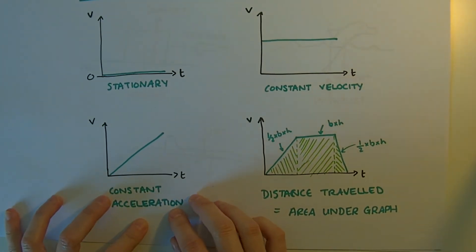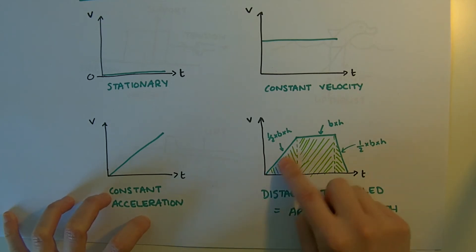One thing you might be asked to do using a velocity time graph is to find the distance travelled. Some people then try and use speed as distance divided by time. It's not going to work. With a graph, you're looking for the area underneath the graph.